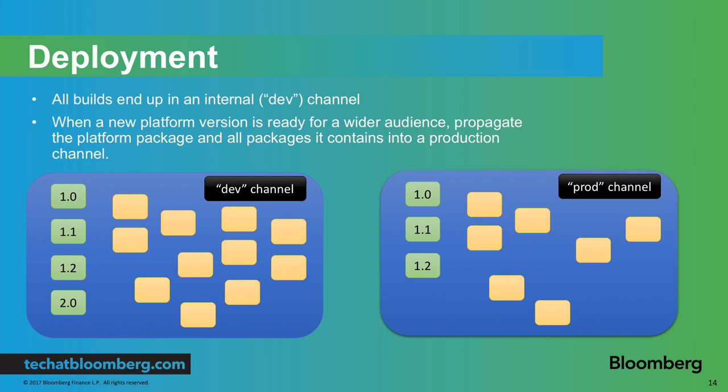Once all our packages are built, they end up in a dev channel where we can try them out — right when we merge a pull request, the package ends up there. When we actually bring packages out to people outside our team to use, they use a prod channel, which is like a separate copy of the dev channel. We have a script that can propagate a manifest version from the dev channel to the prod channel. For example, you have version 2.0 only available in dev; you bring it into prod, and all the packages that are dependencies in the 2.0 manifest get migrated as well.